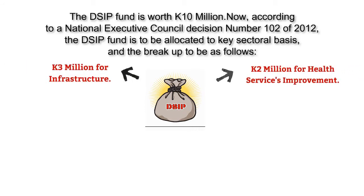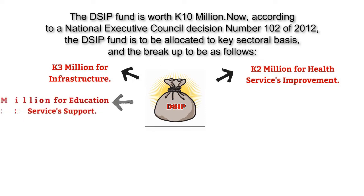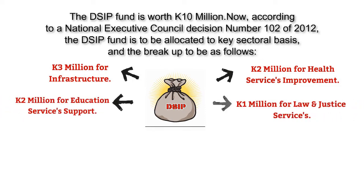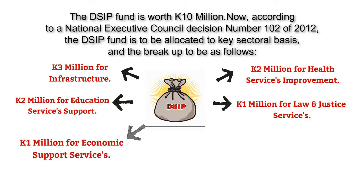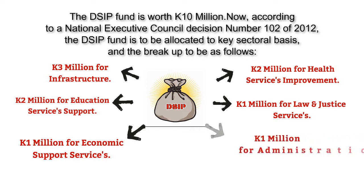services improvement; three, 2 million kina for education services support; four, 1 million kina for law and justice services; five, 1 million kina for economic support services; and six, 1 million kina for administration.